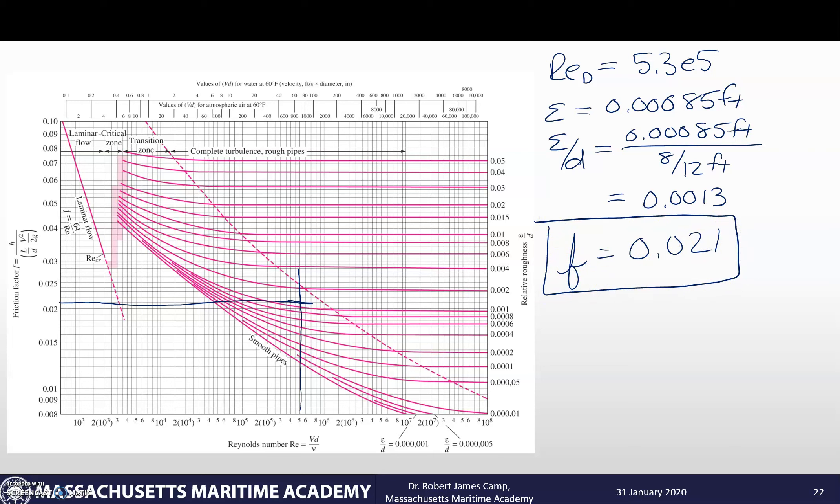So using that f value, let's plug that into the Darcy-Weisbach equation. f l over d v squared over 2g. So 0.021. Our length of pipe was 150 feet. We'll divide that by 8 twelfths of a foot. Our velocity was calculated out to be 9.6 feet per second squared, divided by 2 times 32.2 feet per second squared. Feet cancel. Seconds squared cancel. I'm going to just be left with feet, which is good because that's what I expect. So my head loss due to friction, when I calculate that out, will be 6.8 feet.